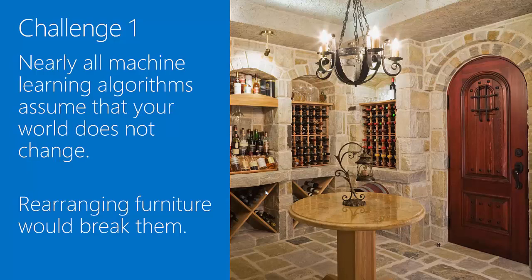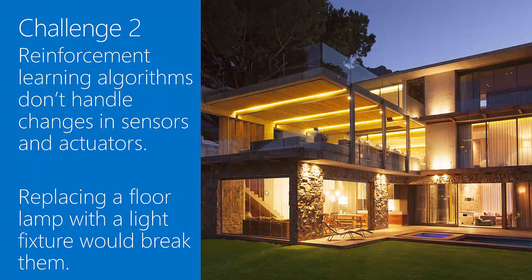The first is that nearly all machine learning algorithms assume that the world doesn't change. If you have a robot vacuum cleaner that makes a very accurate map of your house so it can clean it better, and then you rearrange your furniture, you break the algorithm and it has to start over. The second challenge is related: reinforcement learning algorithms don't handle changes in sensors and actuators. For instance, if you have an outlet controlled by a light switch with a lamp plugged in, and after some time learning that you unplug the lamp and plug in a space heater, each time the switch is flipped the heater turns on or off — a completely different effect. You've changed out the actuator. This would break most reinforcement learning algorithms.